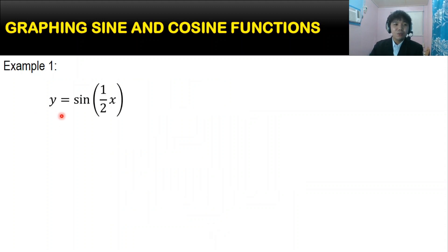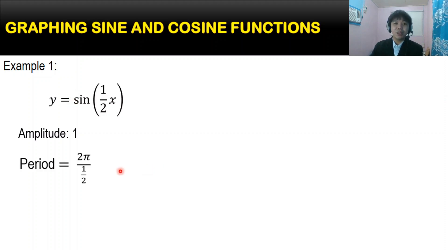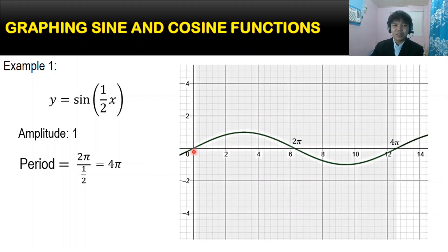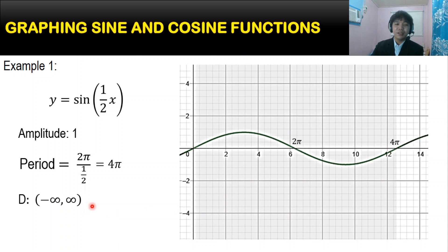For our first example, y equals sin(½x). The amplitude is 1 because the coefficient of sine is 1. For the period, it is 2π over ½, which equals 4π. Here is the graph of our function — the values repeat in every interval of 4π. The domain is the set of all real numbers, and the range has a minimum value of negative 1 and a maximum value of positive 1.